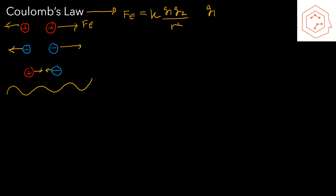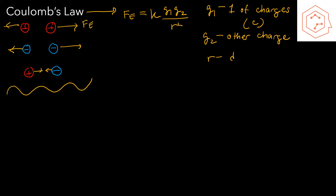Similar to the gravitational law, q1 is the magnitude of one of the charges — we don't care about the sign — given in coulombs. q2 is the magnitude of the other charge, and r is the distance of separation between their centers. From the diagram, q1 is one charge, q2 is the other, and r is the distance between their centers.